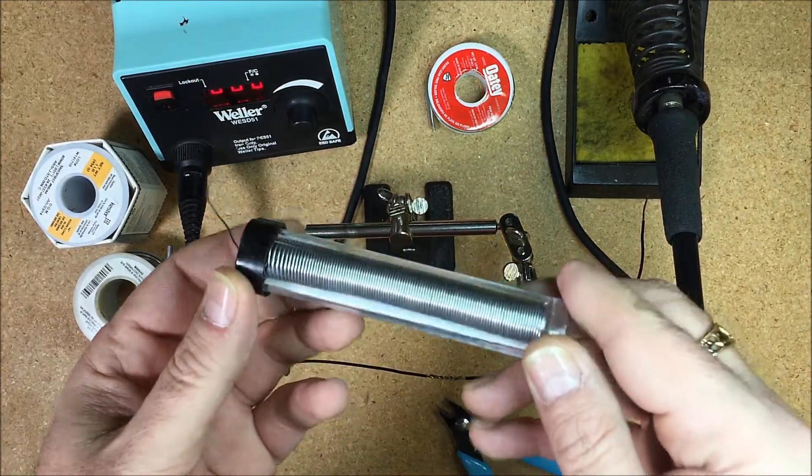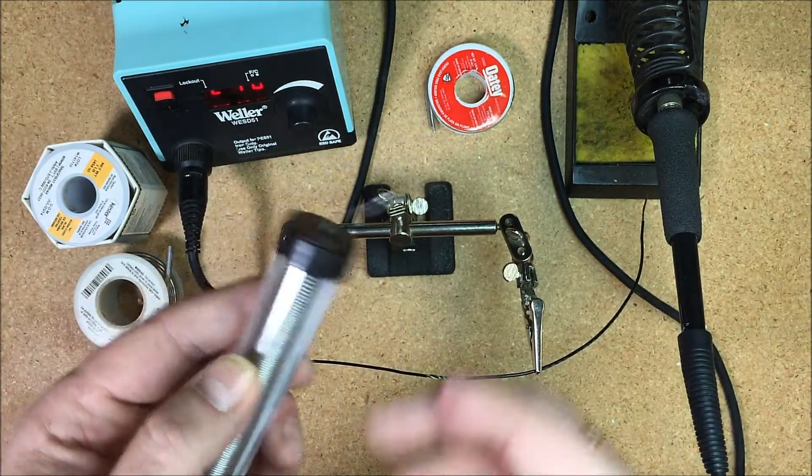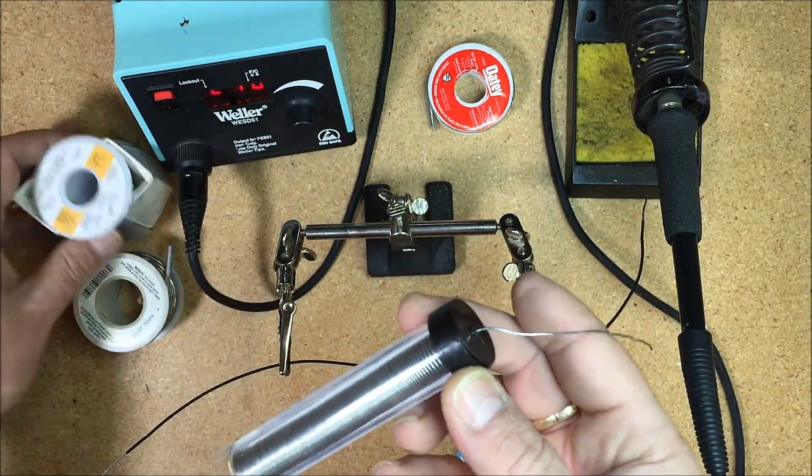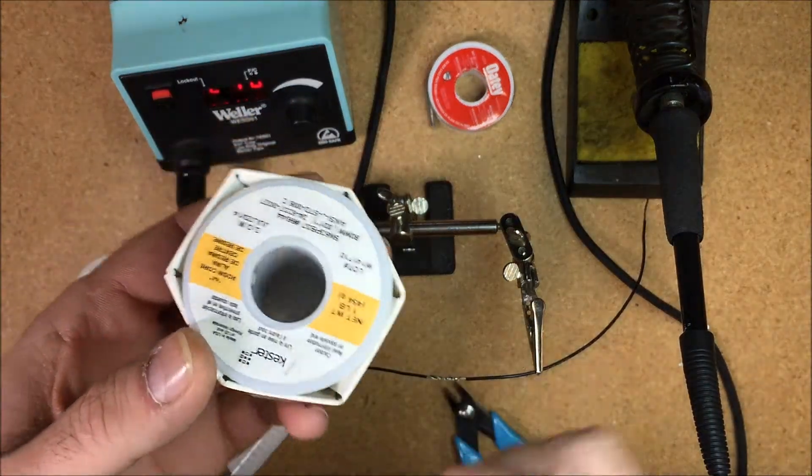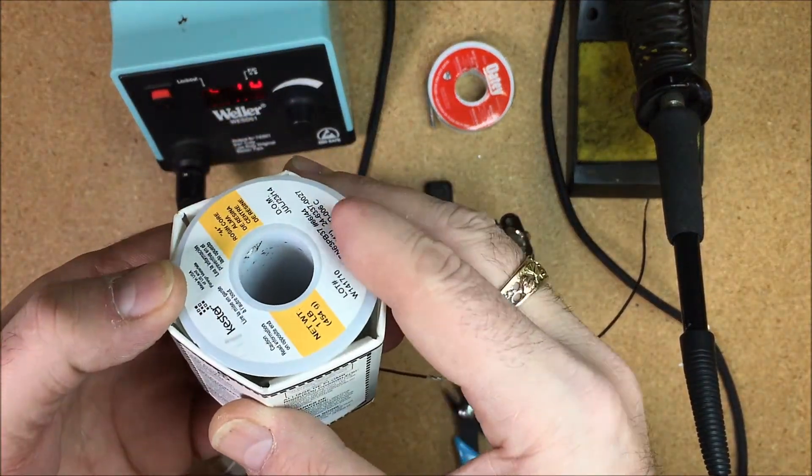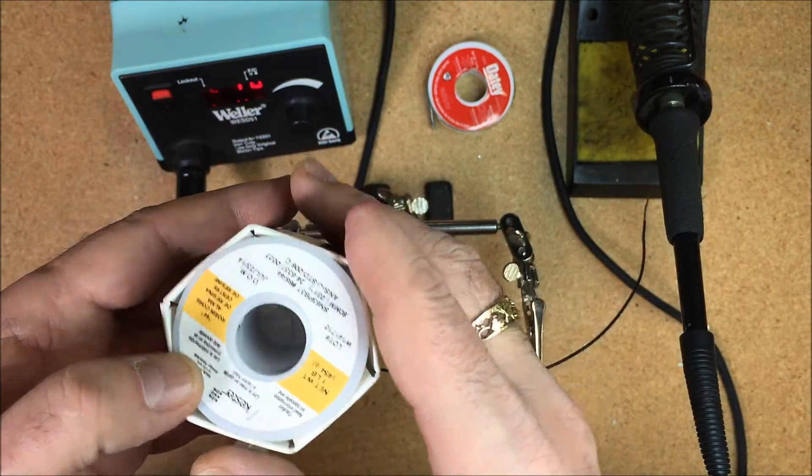We have these little tubes of solder for sale on our website. The reason we have these little tubes is because there's no need for the average person to go buy one of these big giant spools, which is over a pound and approximately 500 feet of solder.